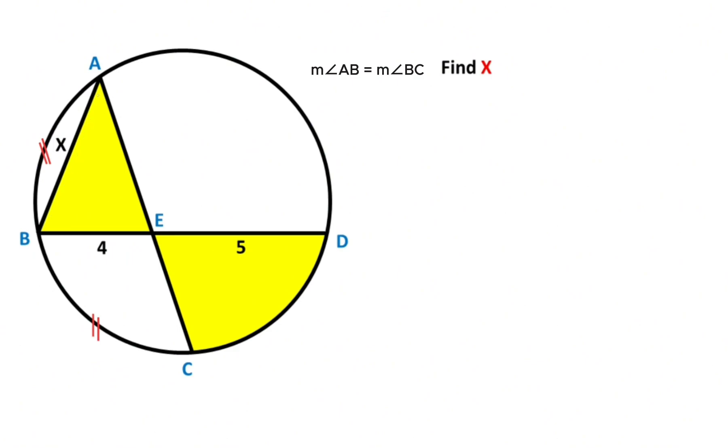First, let's call here alpha. And if we extend these two corners, angle BDC must be equal alpha, right? Why? Because they have same arc.